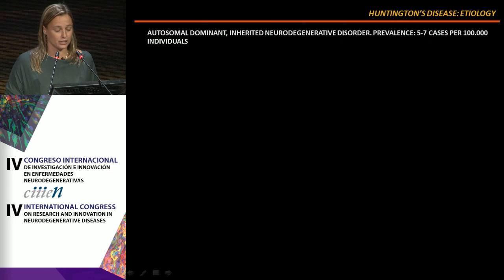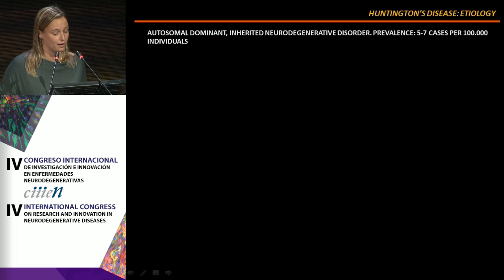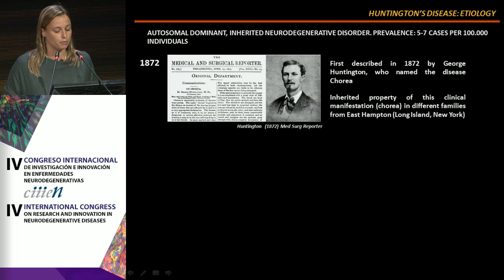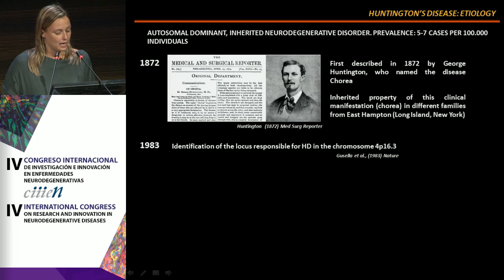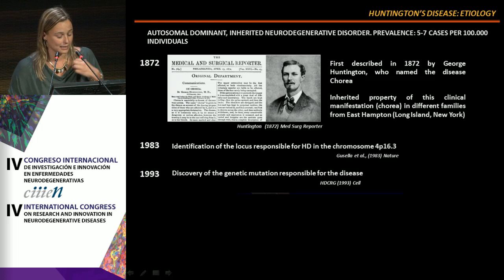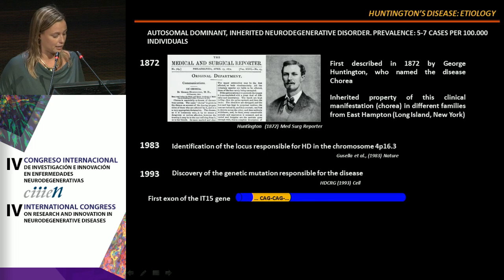As a brief introduction, HD is an autosomal dominant inherited neurodegenerative disorder with a prevalence around five to seven cases per 100,000 individuals, first described in 1872 by George Huntington. A hundred years later, the locus responsible for HD was identified on chromosome 4, and ten years after that, the genetic mutation was discovered in the first exon of the IT15 gene.